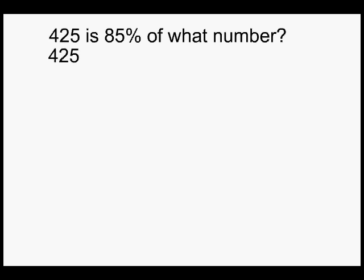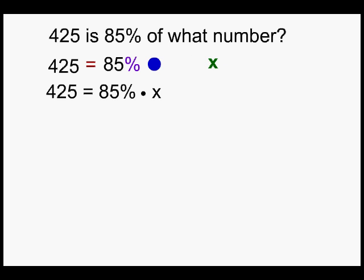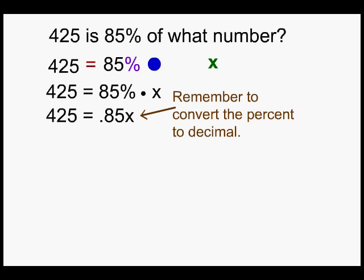425 is 85 percent of what number? 425 'is' means equals, 85 percent, 'of' means to multiply, and 'what number' is your variable X. Let's put it all together. Remember, we need to convert the percent into a decimal.